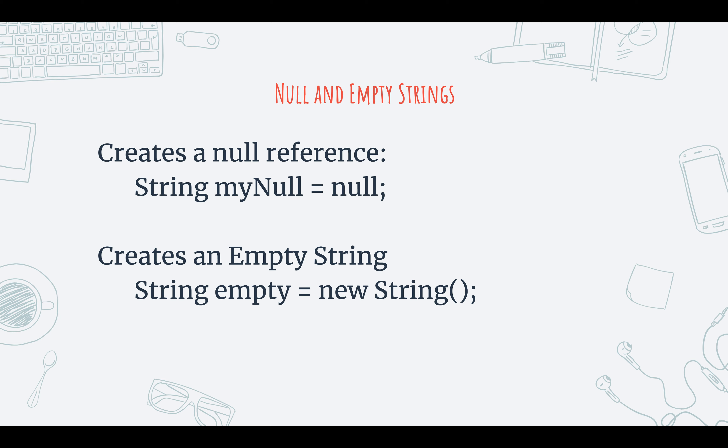An empty string is different from a null reference, because an empty string means the identifier is pointing to a memory location because we're accessing the new String constructor. So if the new String constructor is being invoked, that means we're creating a string object. But since there are no arguments, there is nothing there — it's pointing to a memory location, but there are no characters, and that includes spaces. So the difference: a null reference says we're not pointing to anything — we're a null pointer. An empty string is pointing to a memory location, but there's nothing in that memory location.